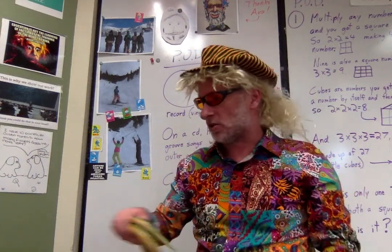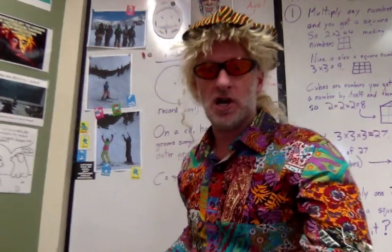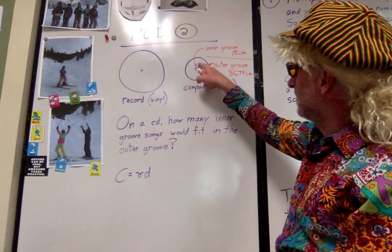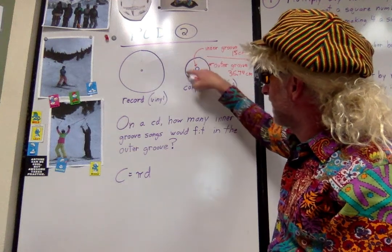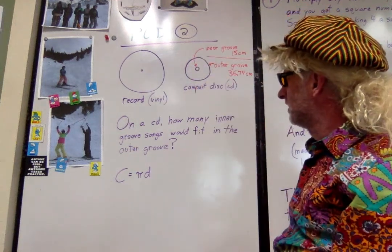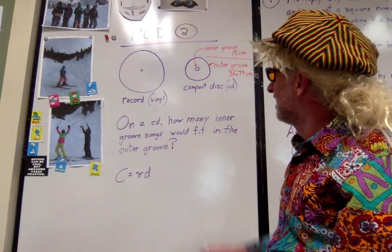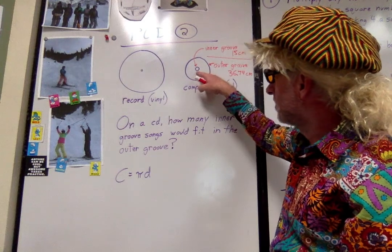So here's the big question for y'all, are you ready? So we got our compact disc that has an inner groove and an outer groove because again it's spiraling outward, right everybody? So my made-up question that I'm real curious about is you have a CD, how many inner groove songs could fit on the outer groove?